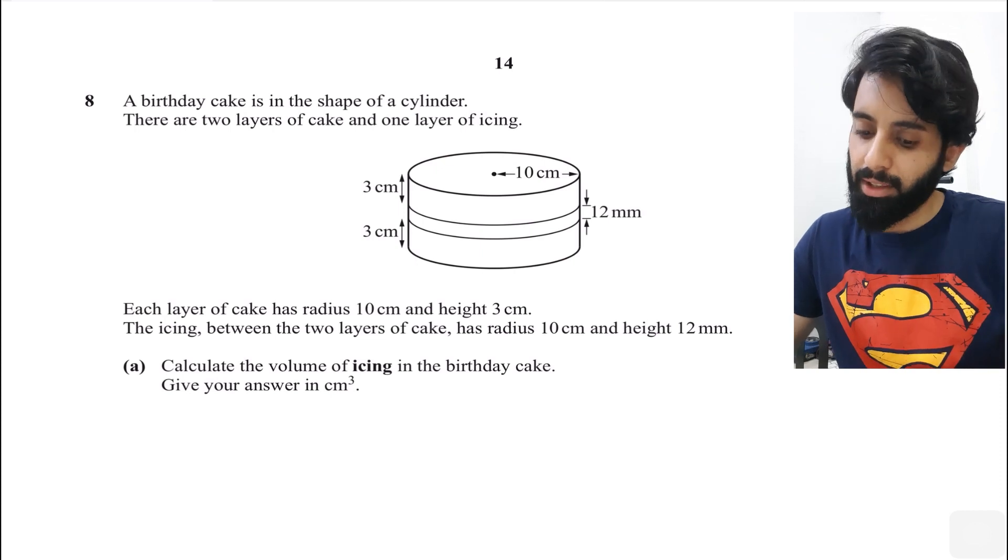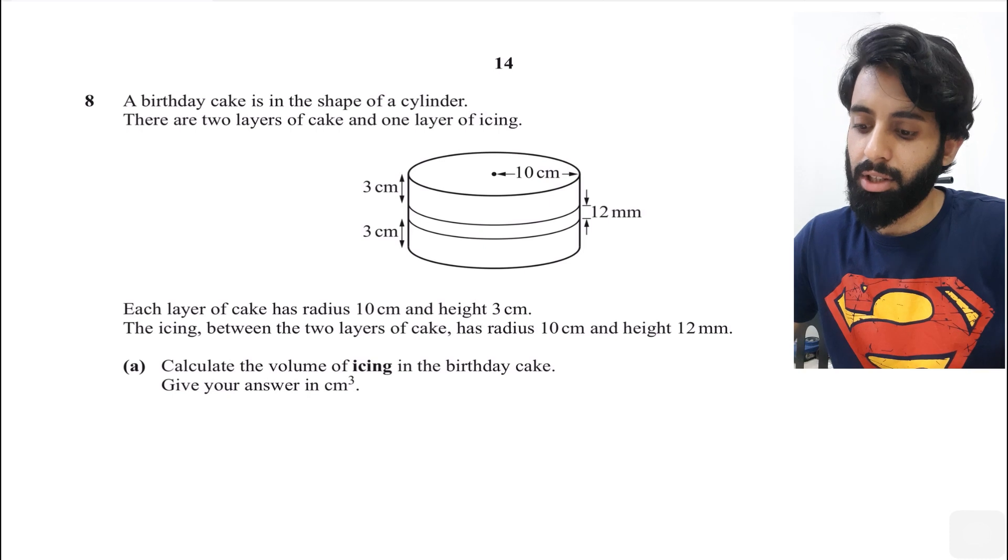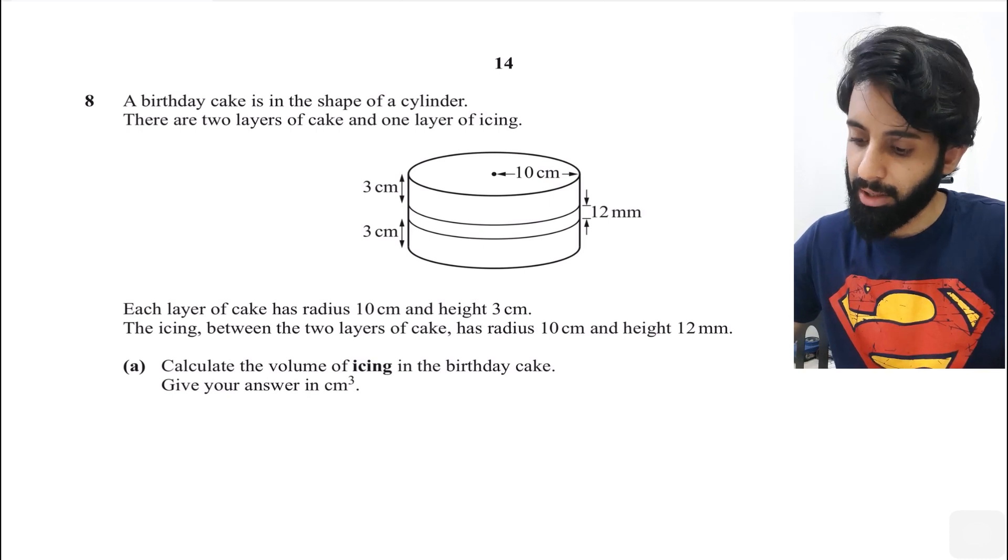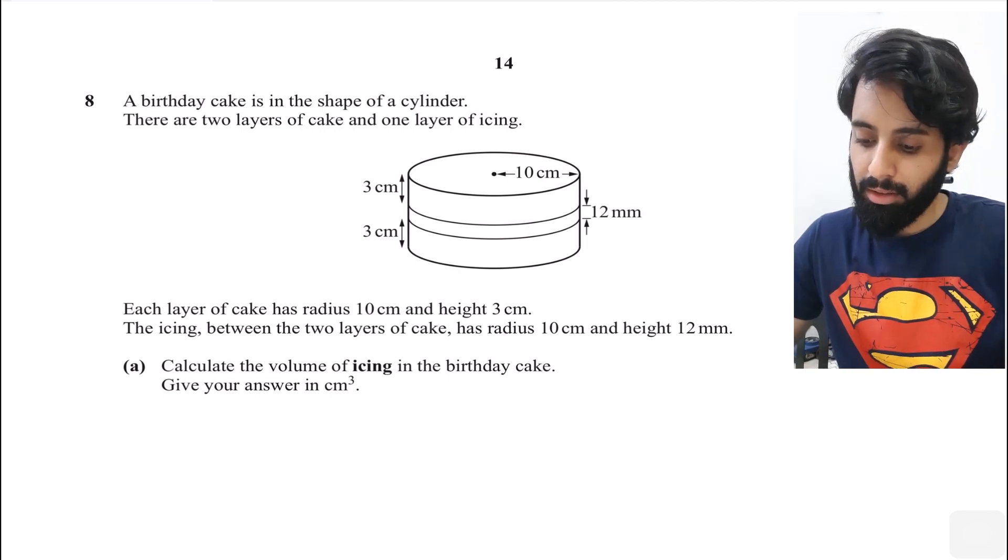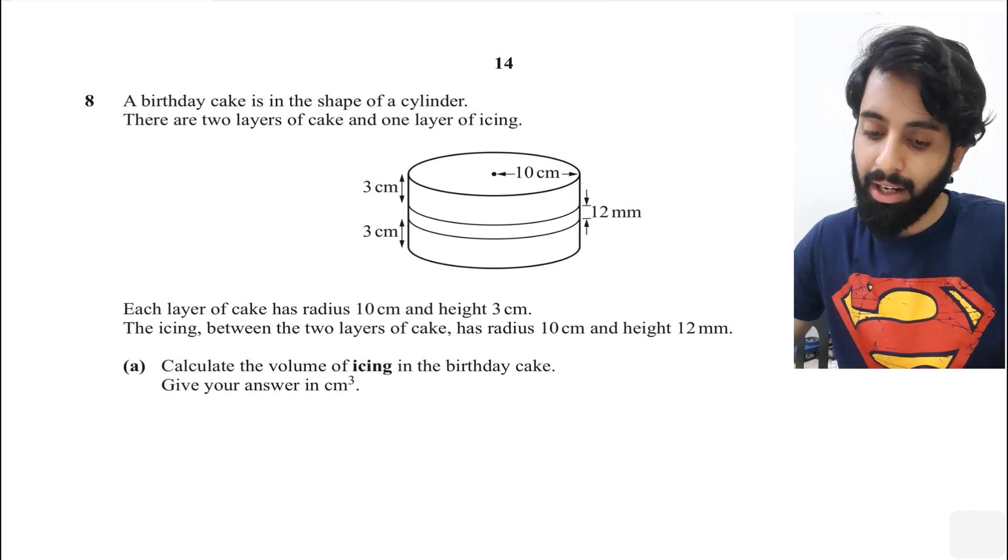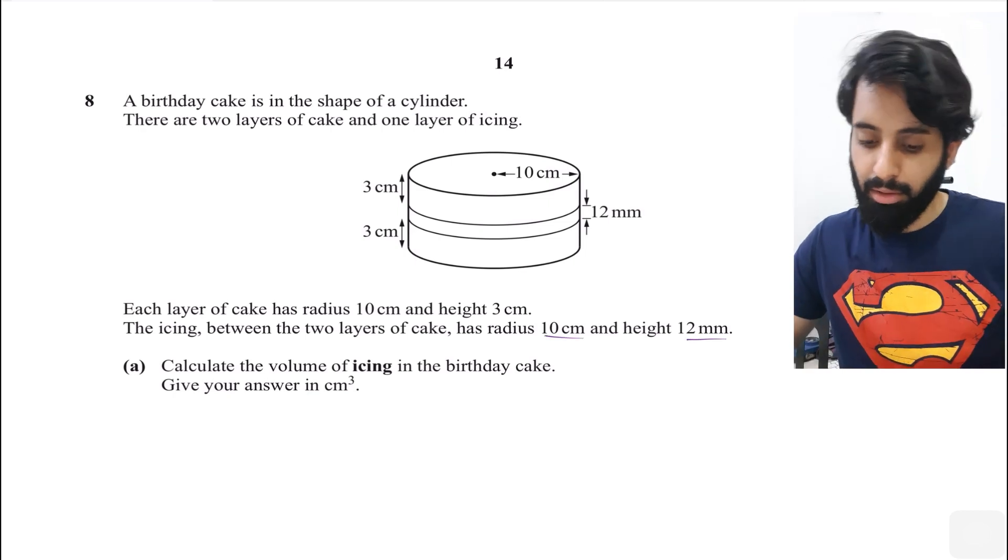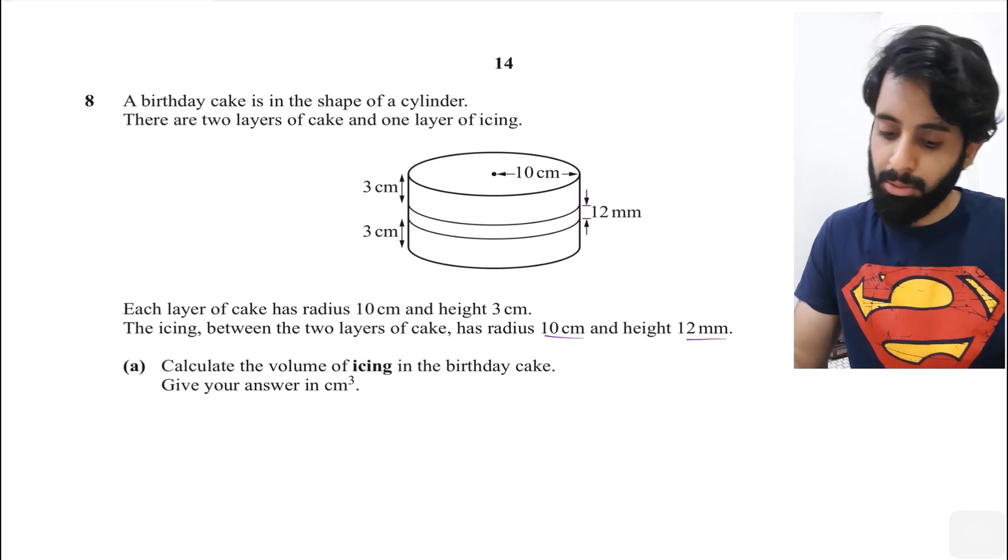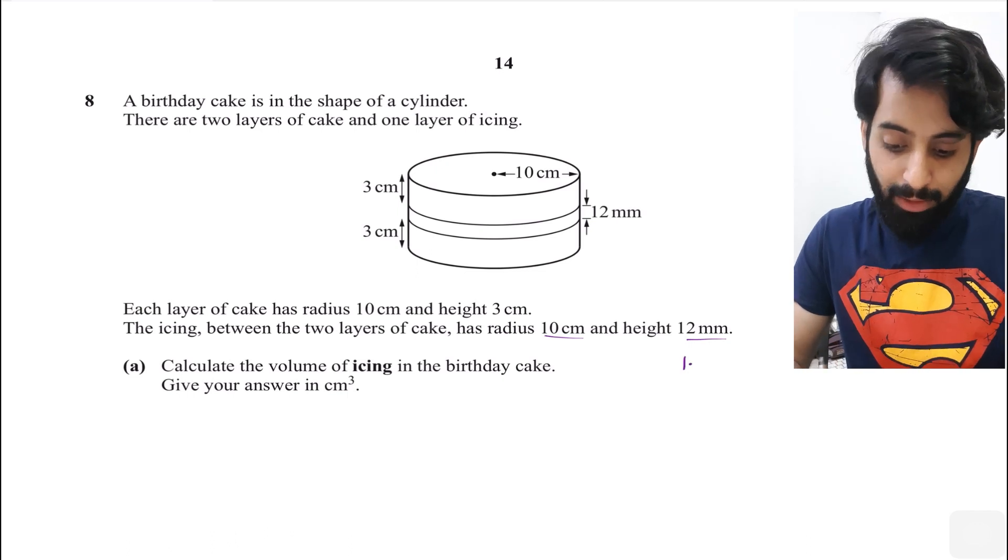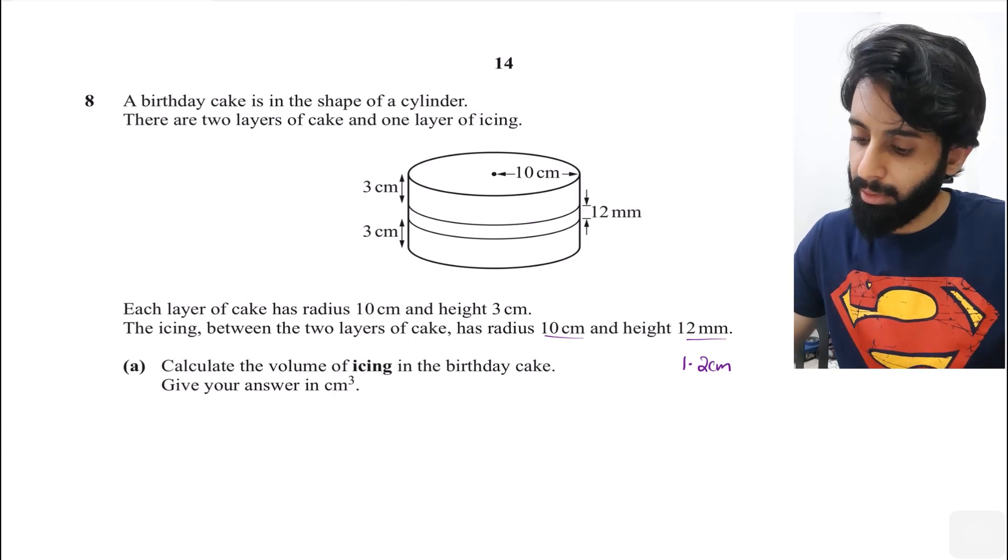This is a fairly difficult question because there are a lot of catches. The problem says a birthday cake is in the shape of a cylinder with two layers of cake and one layer of icing. Each layer of cake has radius 10 cm and height 3 cm. The icing has radius 10 cm and height 12 mm. The first catch is that we have lengths in two different units, so I'll convert 12 mm to 1.2 cm. Remember that 1 cm equals 10 mm.